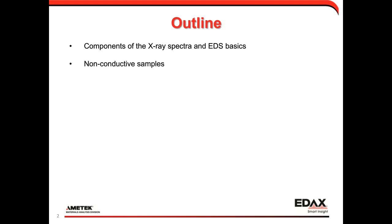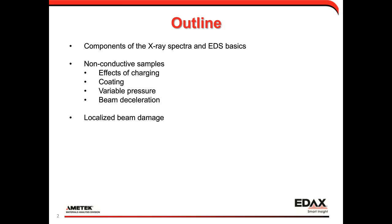We'll start with the basics, then look at the most common problem: non-conductive samples — examining the effects of charging and what we can do about it, including coating, variable pressure, and beam deceleration mode. Then we'll look at actually damaging samples, with two examples: common table salt (sodium chloride) and a sample containing bacteria. We'll cover damage mechanisms, scan strategies for mapping beam-sensitive samples, and finally summarize everything.